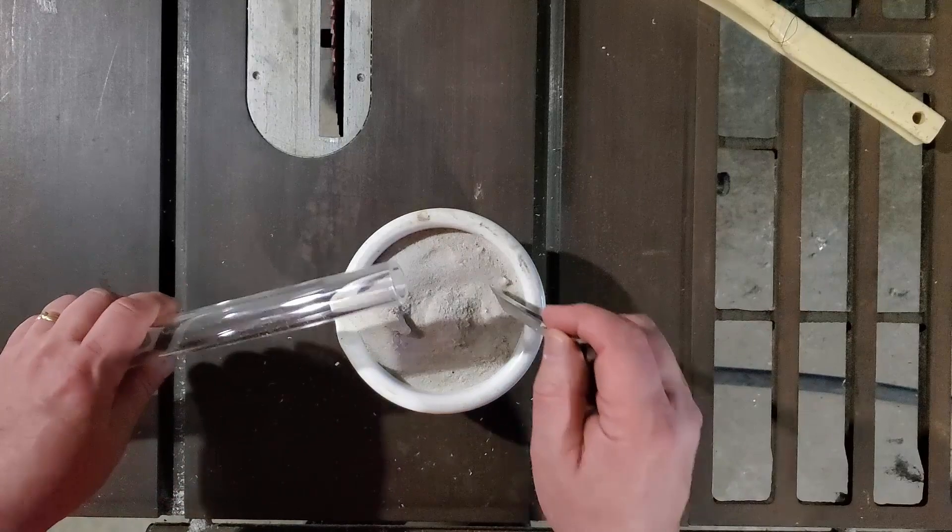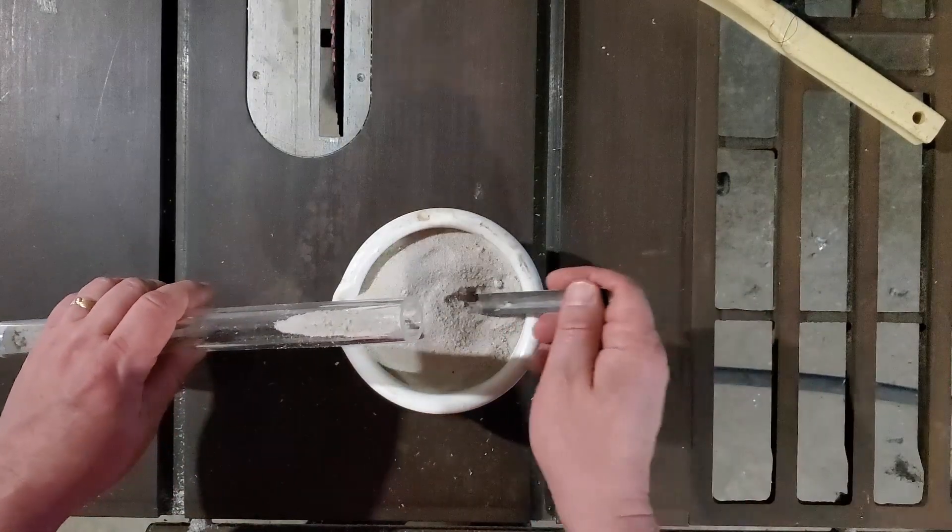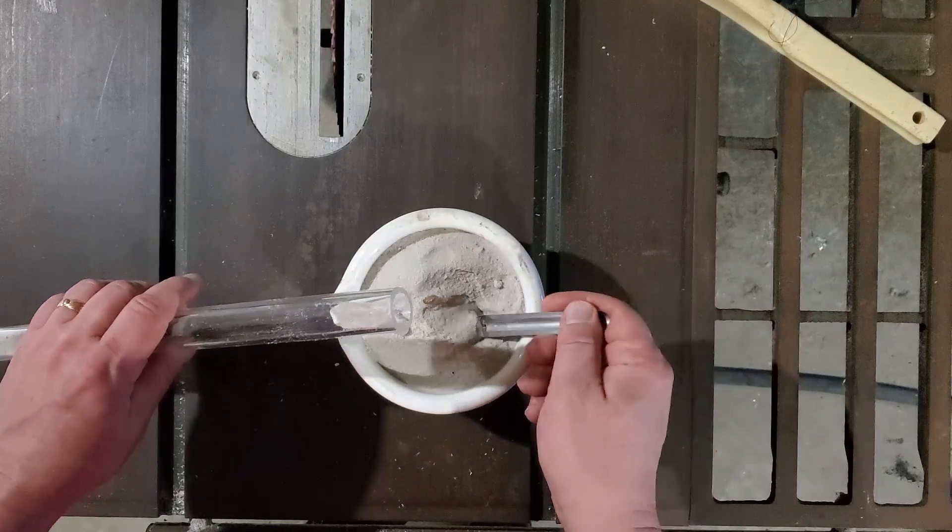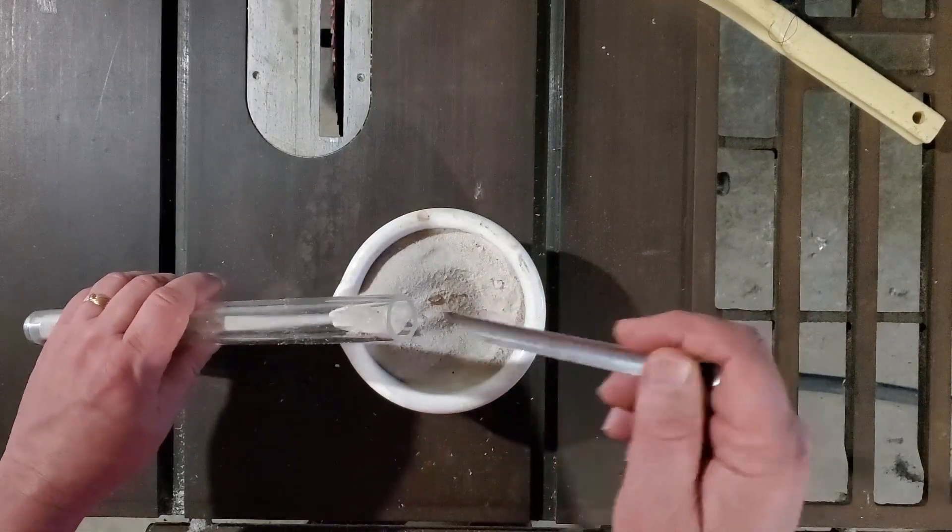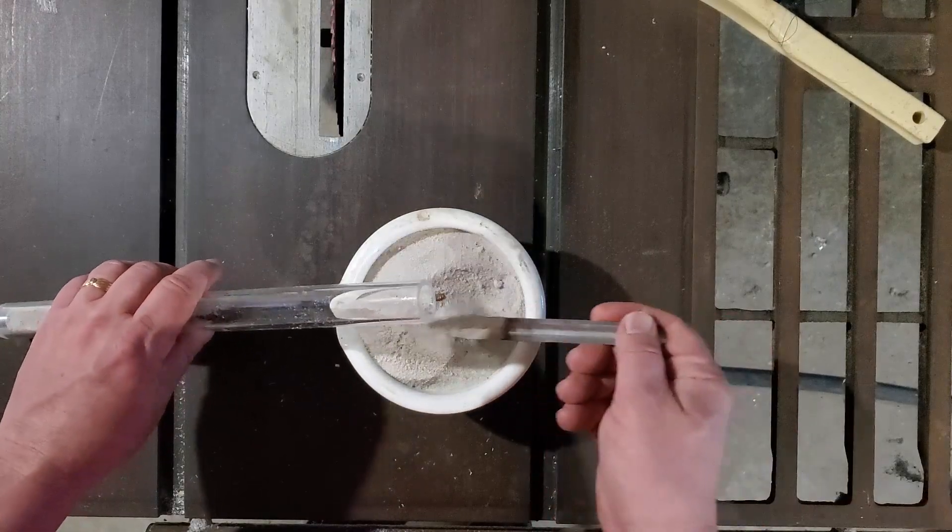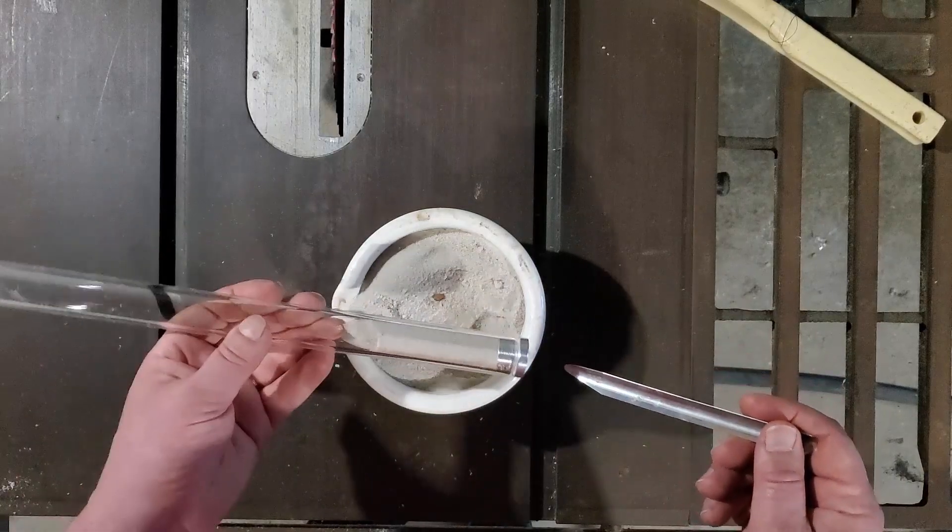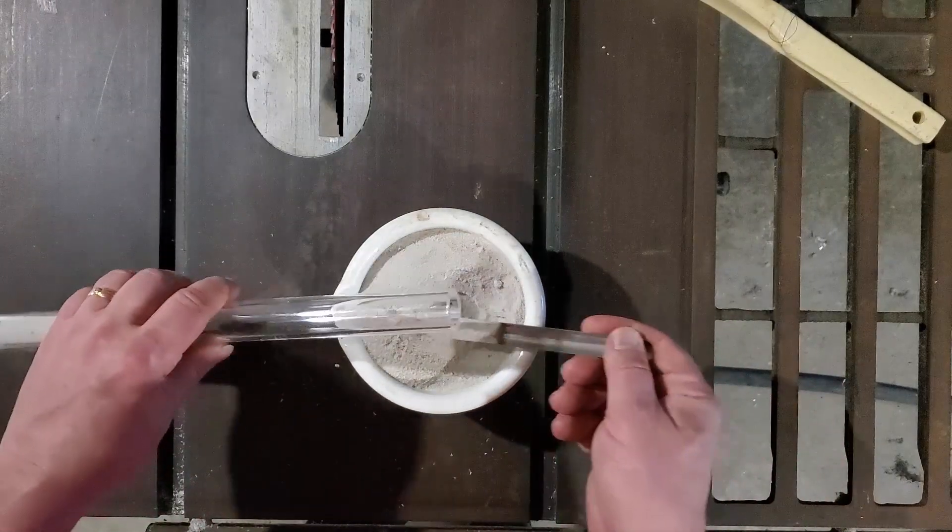I figured before I got around to heating up the sand and getting it all set for that, I thought I would do a couple dry runs, get everything, all the kinks out and make sure I knew where everything was going to go and how it was all going to work before I was dealing with sand at, I think I put it up to 350 degrees. So this is my dry run.